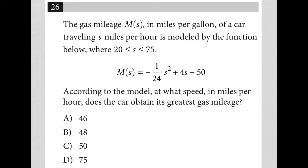So this question is a little weird. It looks like it could be a translated word problem question, but let's read it and see what's going on. The question says that gas mileage M of S in miles per gallon of a car traveling S miles per hour is modeled by the function below, where S is between 20 miles per hour and 75 miles per hour. So we have our function provided here.